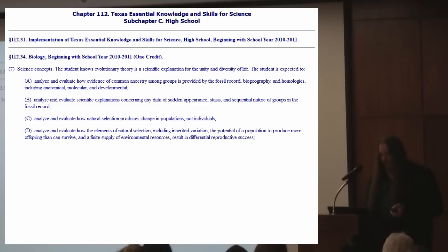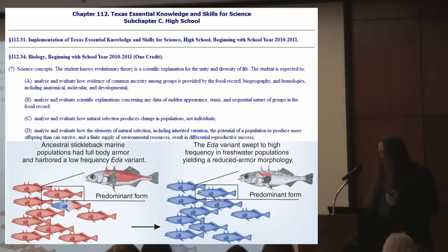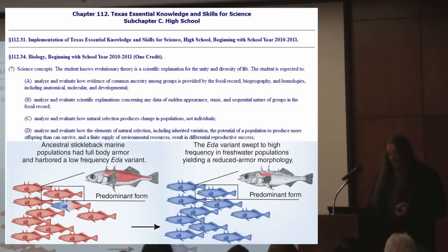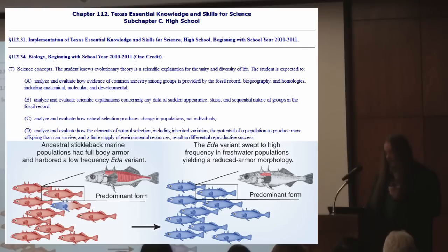Natural selection summarized: living things produce more offspring than the finite resources available to them can support, thus they face a constant struggle for existence. Individuals vary in their phenotypes, and some of this variation is inheritable, a reflection of variations in genotype. Those variants best adapted to their conditions are most likely to survive and reproduce — survival of the fittest. To the extent that their adaptations are inheritable, they will be passed on to their offspring. The forces of natural selection act on phenotypes, but only if there is a change in the genotype of a population has evolution occurred.